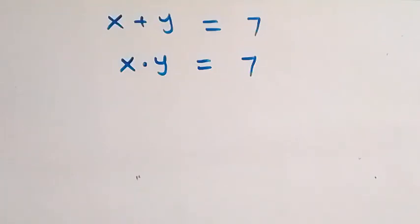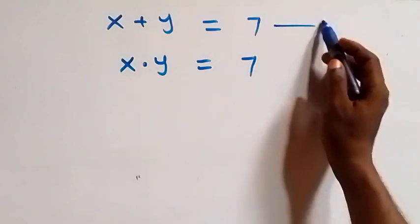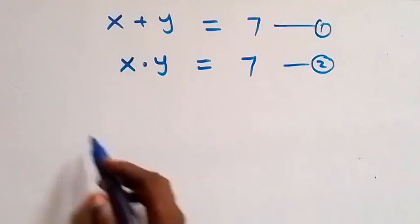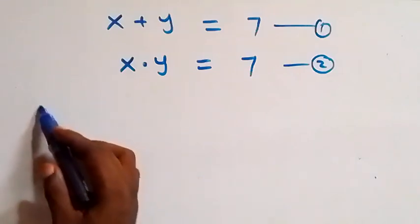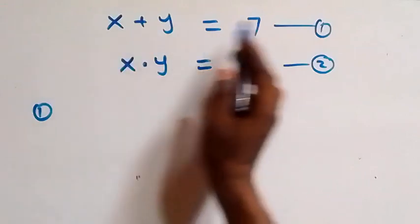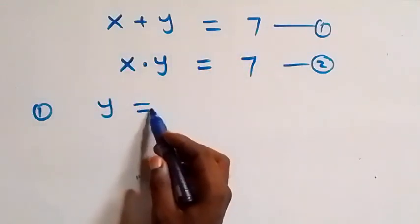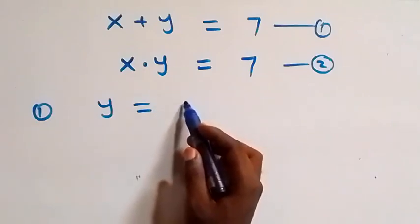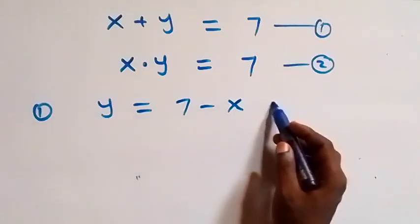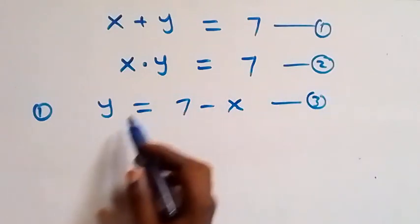Hello, you're welcome. How to solve this nice system of equations. Let this be equation one and this will be equation two. From equation one we make y the subject, and we take x to the other side — that is, y equals seven minus x. We can label this as equation three.